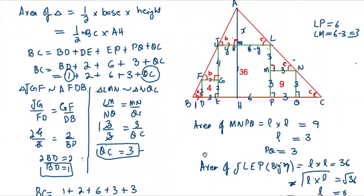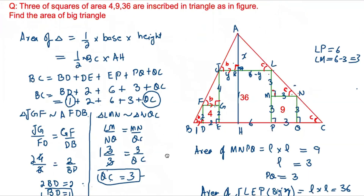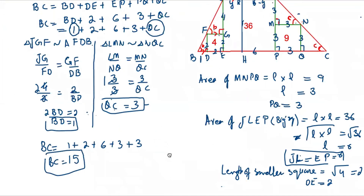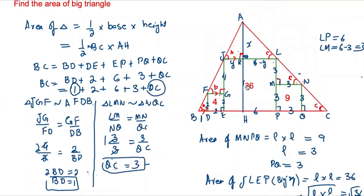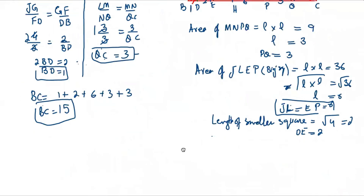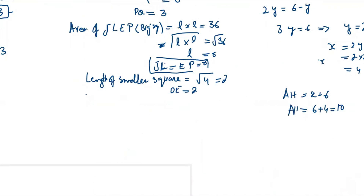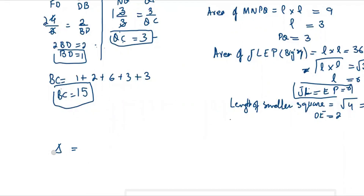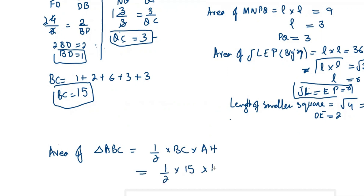The area of triangle ABC equals one-half times BC times AH. BC equals 15 and AH equals 10. Therefore the area equals one-half times 15 times 10, which equals 75 square units.